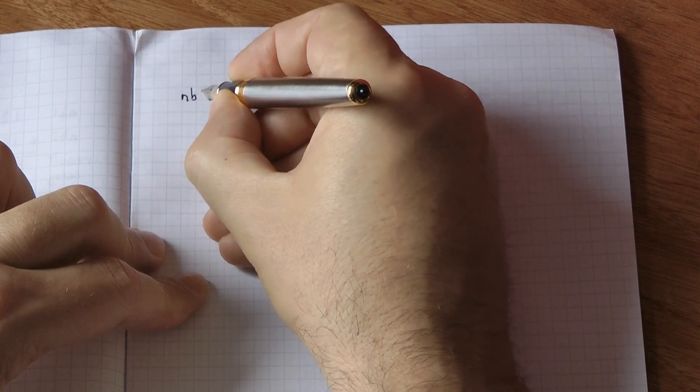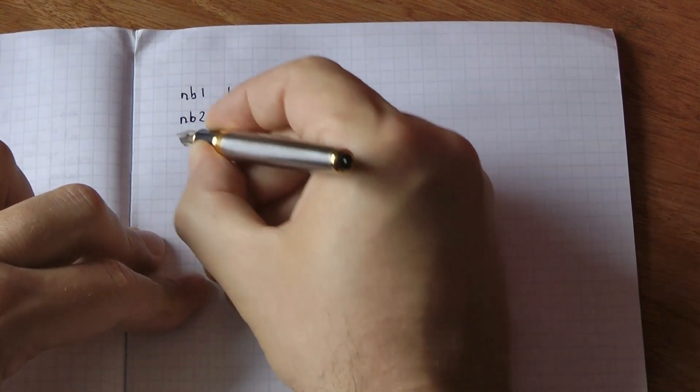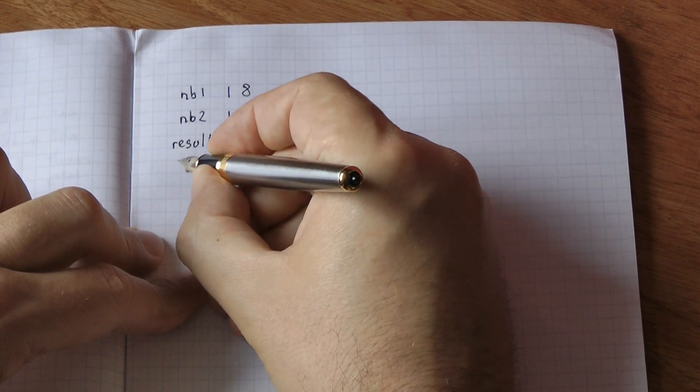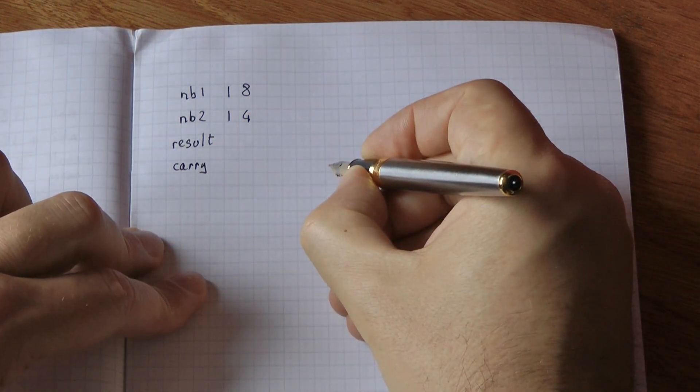You've got your first number on the first line, your second number on the second line. You will write your results, and underneath the results, just if needed, you're going to have a line where you will write down the carry.